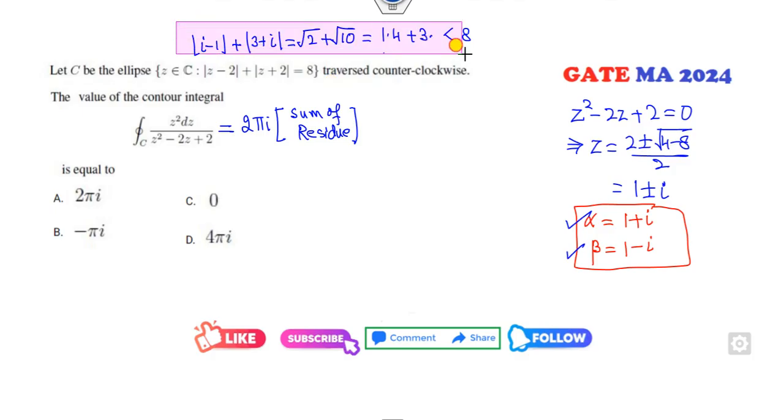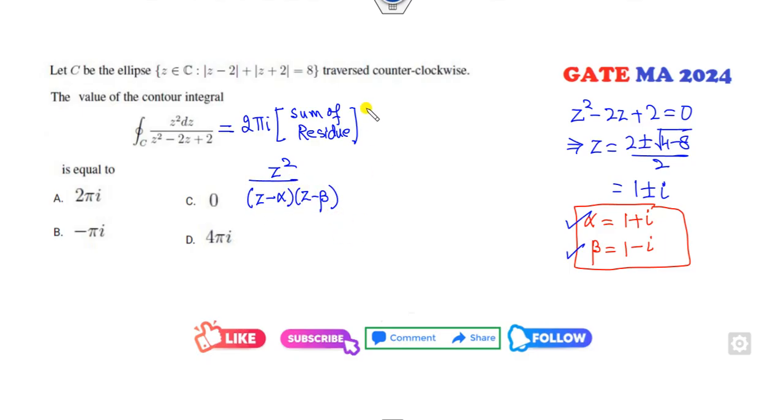Then how can you find that? Now your target is to find the residue. I can write this root here. You have two residues: one corresponding to α, second corresponding to β. What is the residue at α?